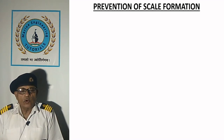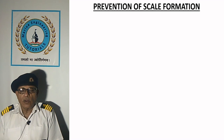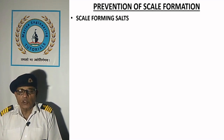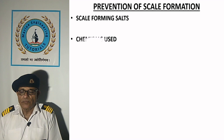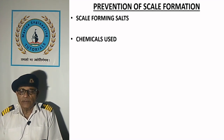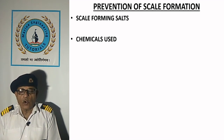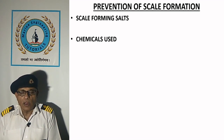Coming to prevention of scale formation: scale-forming salts — calcium sulfate, calcium carbonate and magnesium sulfate — are mainly responsible for scale formation in boilers. In earlier days, lime and soda treatment were prevalent, which have been replaced by phosphate and caustic treatment in modern boilers. Use of phosphate instead of sodium carbonate reduces the amount of caustic soda to be used.